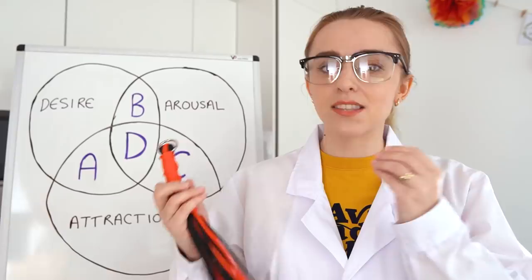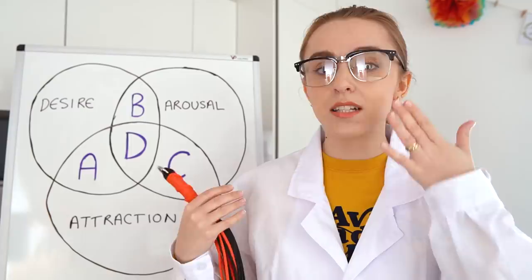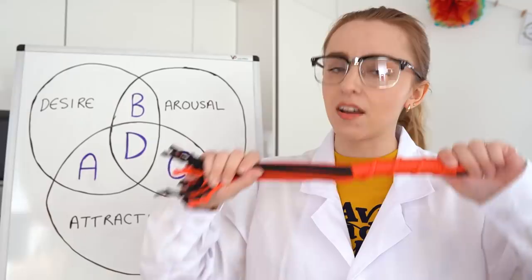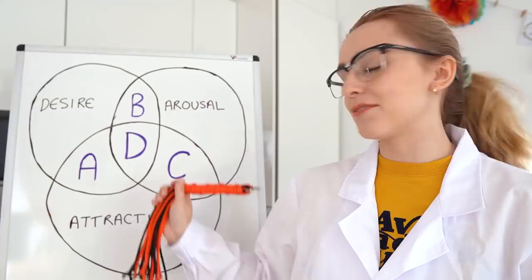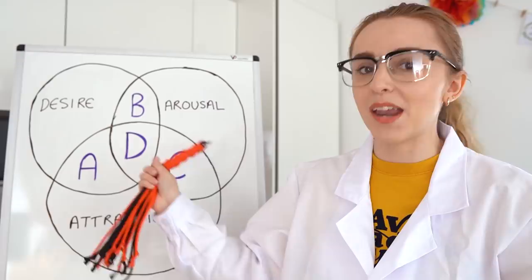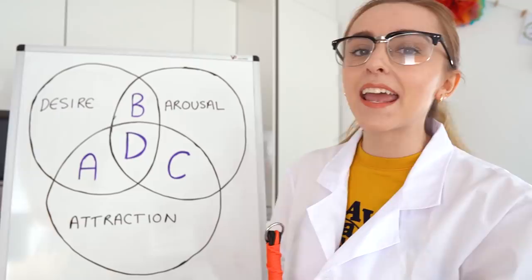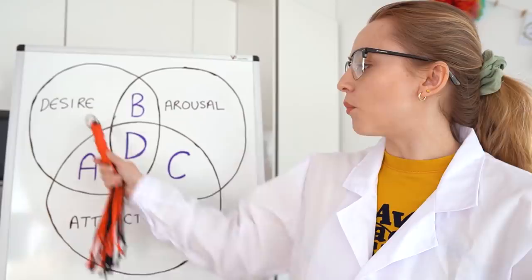So now I want to talk about what it looks like when these three things interact with each other and when they don't. And you know that this is serious because I've got my lab coat on, I've got my fake dirty glasses on. We have a Venn diagram and I've got a mini flogger. So it's time to get down to business. This is my desire-arousal-attraction Venn diagram — something that I made up. I literally woke up in the middle of the night and was like, 'oh my God, it's a Venn diagram,' and just started scribbling things down at like two in the morning. And here we are.